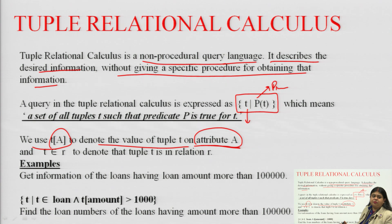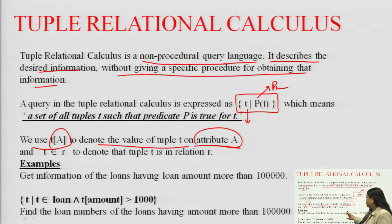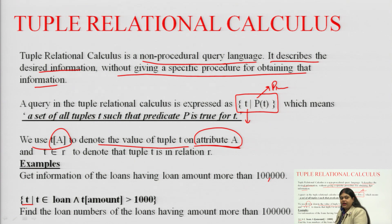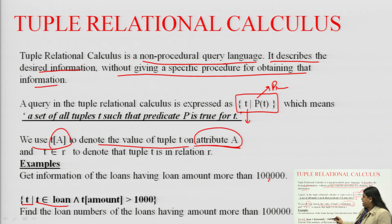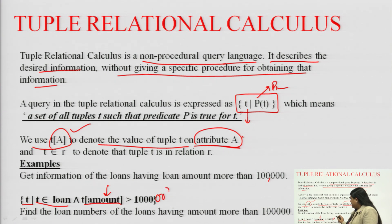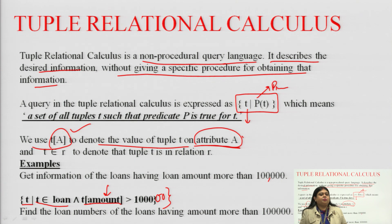Using examples will help you understand tuple relational calculus much better. The first example says: get information of loans having loan amount more than 1 lakh rupees. We start with the bracket, define the set of tuples where the tuple belongs to the loan relation, and the amount — the tuple on attribute amount — is more than 1 lakh rupees.